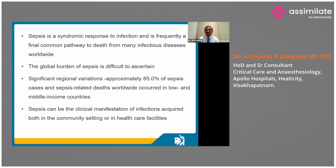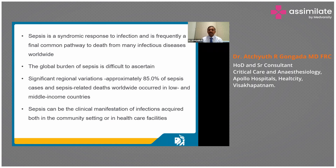Sepsis is a syndromic response of the body when there is an infection, and it is frequently a final common pathway to death in many infectious diseases around the world. It's not easy to ascertain the global burden because patient reporting systems are not complete and concrete in all nations, but there are estimates. There are significant regional variations based on the economic status of countries, and approximately 85% of sepsis cases and sepsis deaths worldwide occur in low- and middle-income countries.